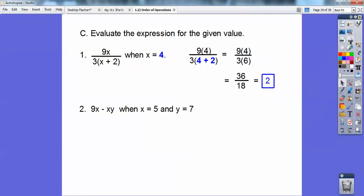All right, 9x minus xy. So wherever I see an x, I'm going to plug a 5. Wherever I see a y, I'm going to plug a 7. So x goes in, 5 goes in for that x and that x, and then this 7 goes in right there.